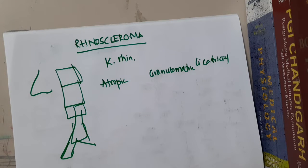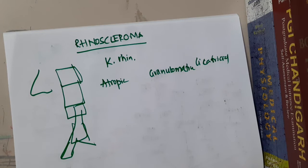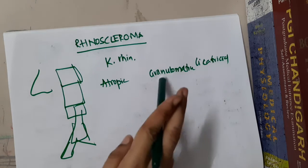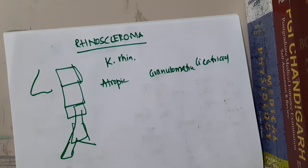In the atrophic stage, you will see atrophic rhinitis, where crusting is seen in the nasal cavity along with purulent nasal discharge.